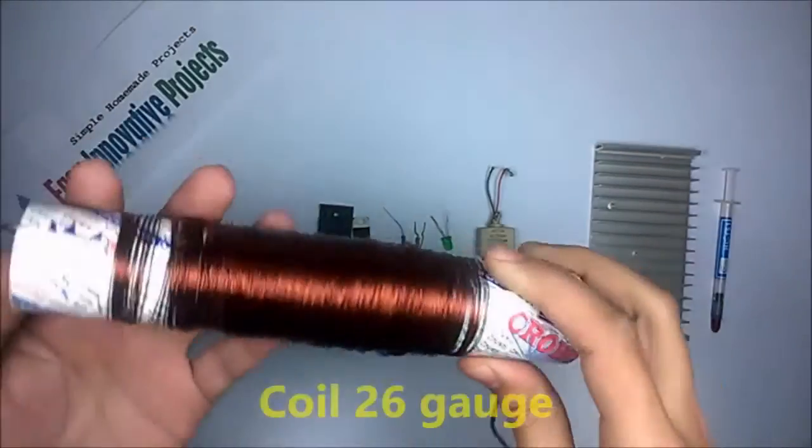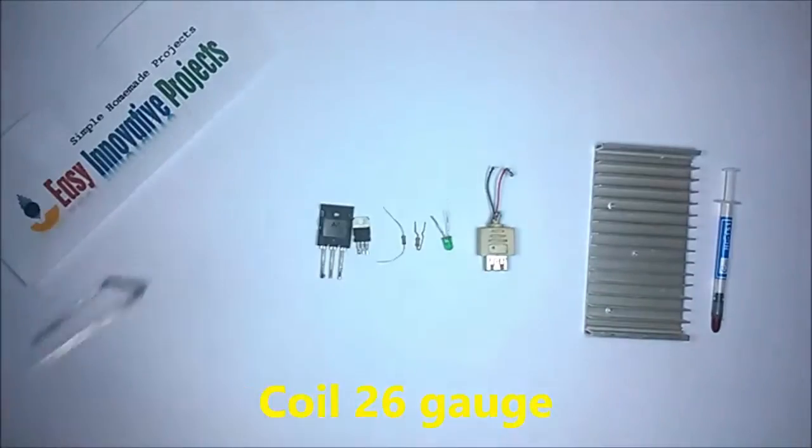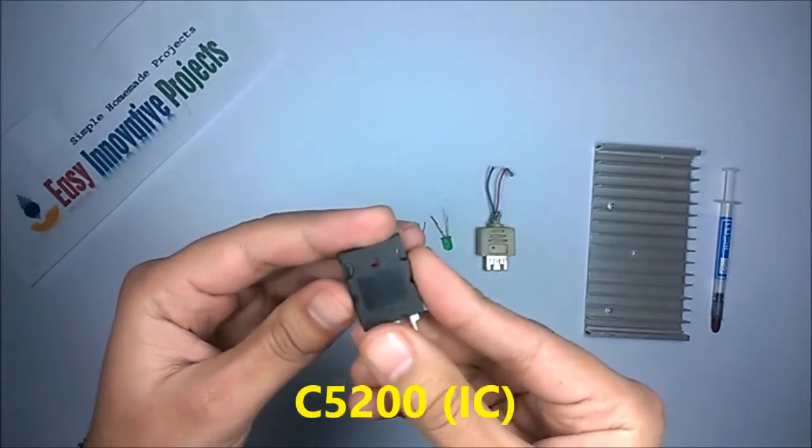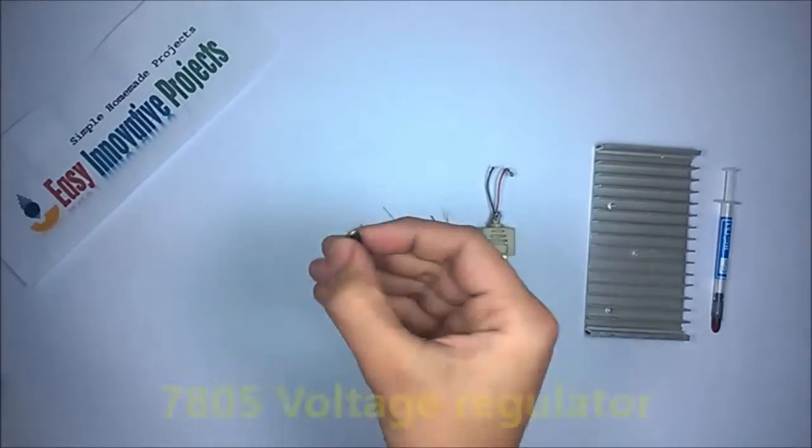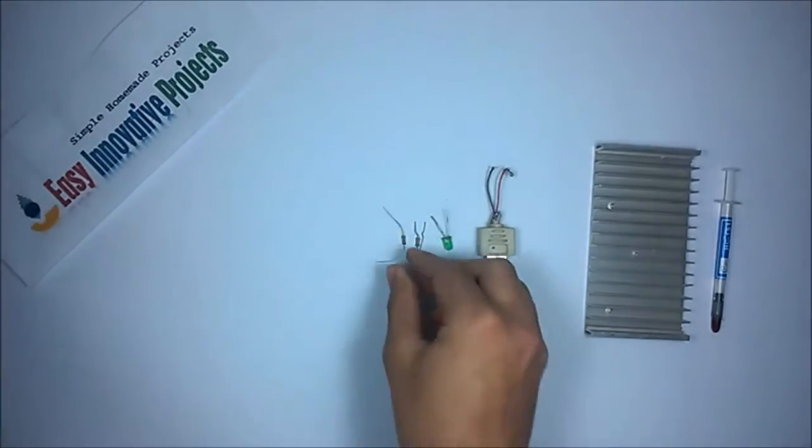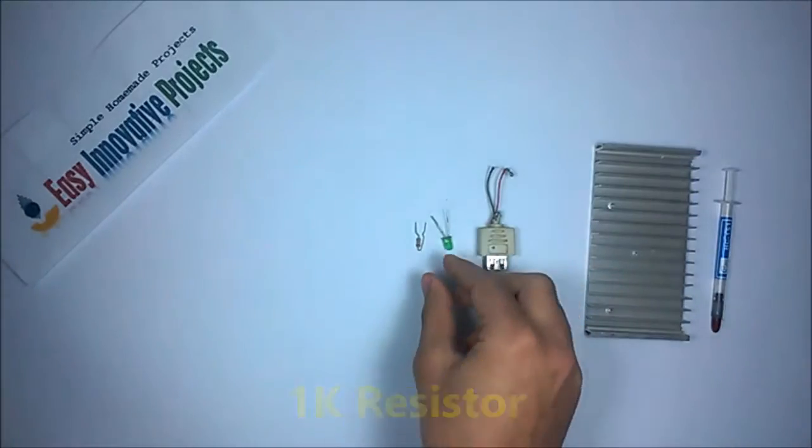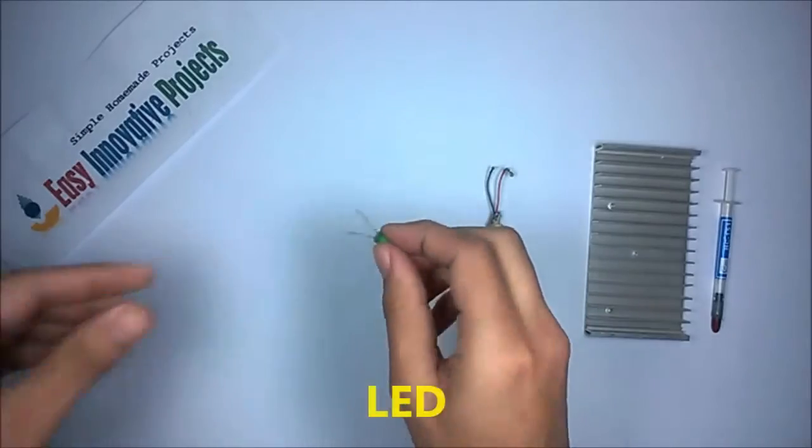Copper coil 26 gauge, C5200 IC, LM 7805 voltage regulator, 1K resistor, 6.8K resistor, LED, female USB pin, heat sink, and heat sink paste.